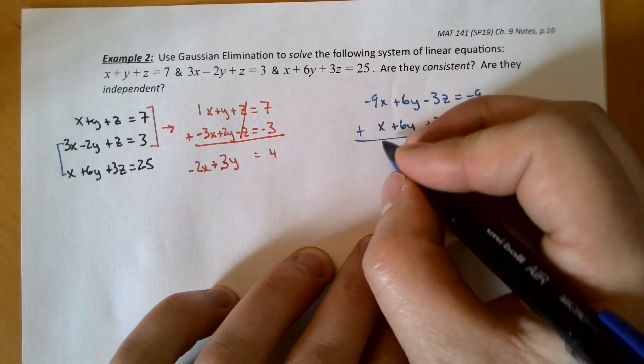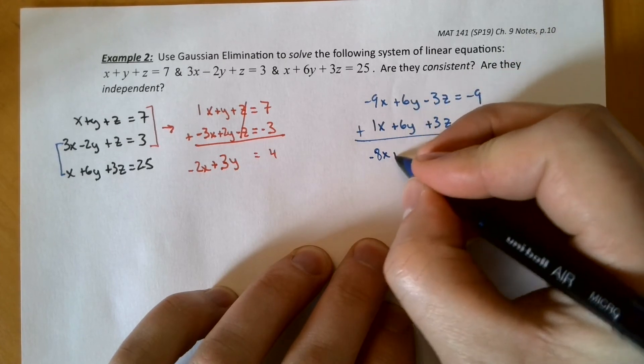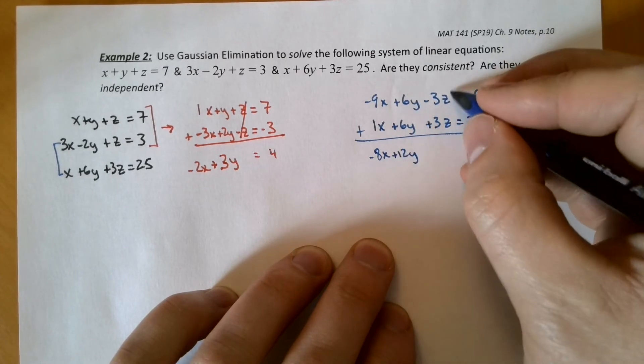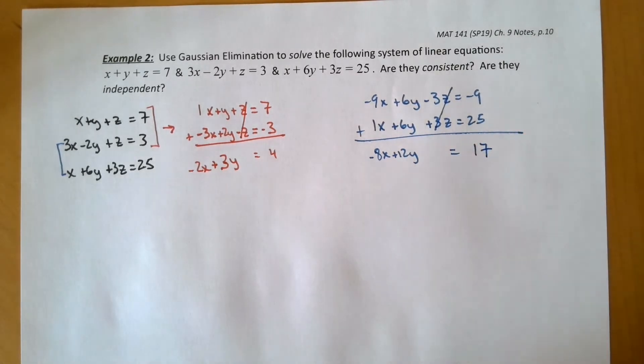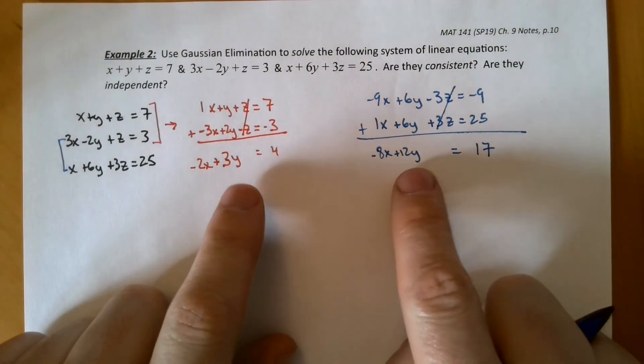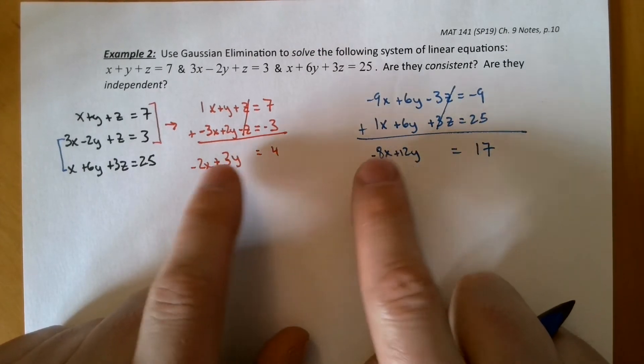So negative 9X plus 1X is negative 8X. 6Y plus 6Y is 12Y. And that's 0. And this is going to equal, boy, 17. Okay. We now have two, two-variable equations in the exact same variables, X and Y. We're now going to apply elimination to these two variables.